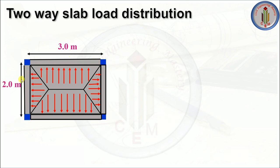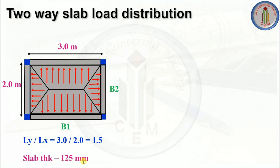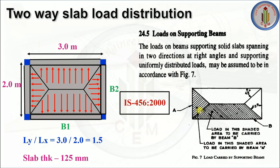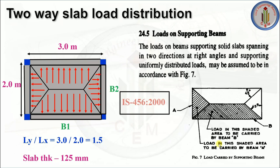Now let's see two-way slab load distribution. Longer span = 3 m, shorter span = 2 m. Ly/Lx = 1.5, which is less than 2 — so it is a two-way slab. Slab thickness is 125 mm. As per IS 456-2000, Clause 24.5 on loads on supporting beams, the loads on beams supporting solid slabs spanning in two directions at right angles with uniformly distributed loads shall be in accordance with Figure 7. The load disperses at 45-degree angles, creating a trapezoidal portion on the longer beams and a triangular portion on the shorter beams.